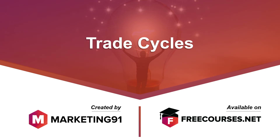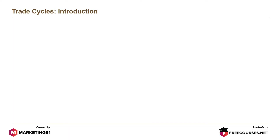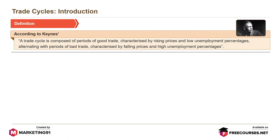Hello and welcome to marketing91.com. According to Keynes, a trade cycle is composed of periods of good trade characterized by rising prices and low unemployment percentages, alternating with periods of bad trade characterized by falling prices and high unemployment percentages.